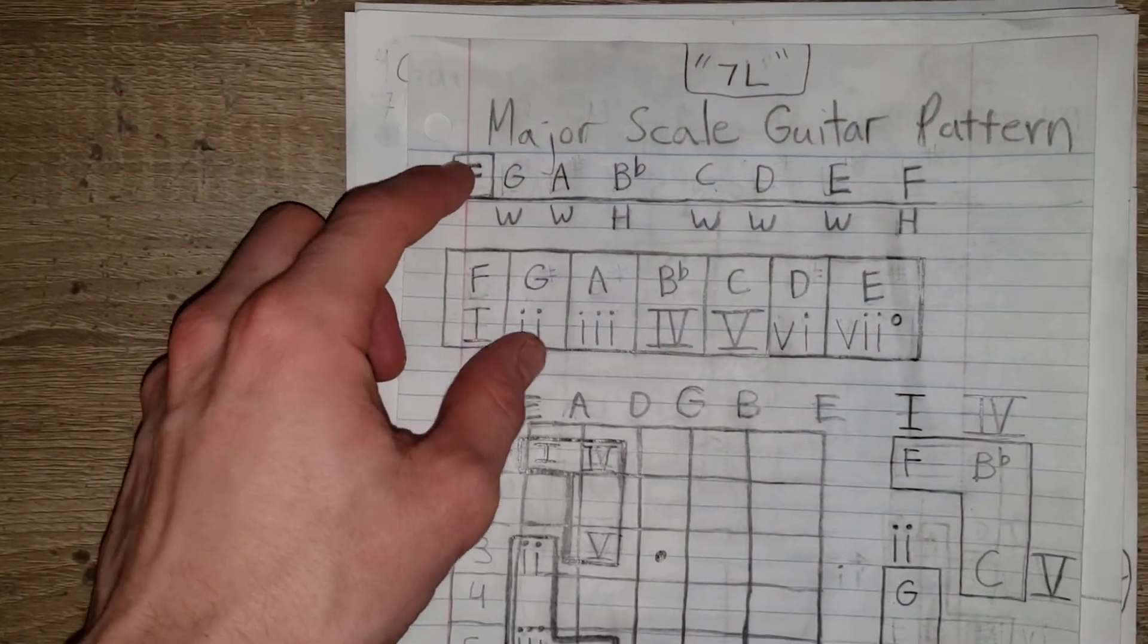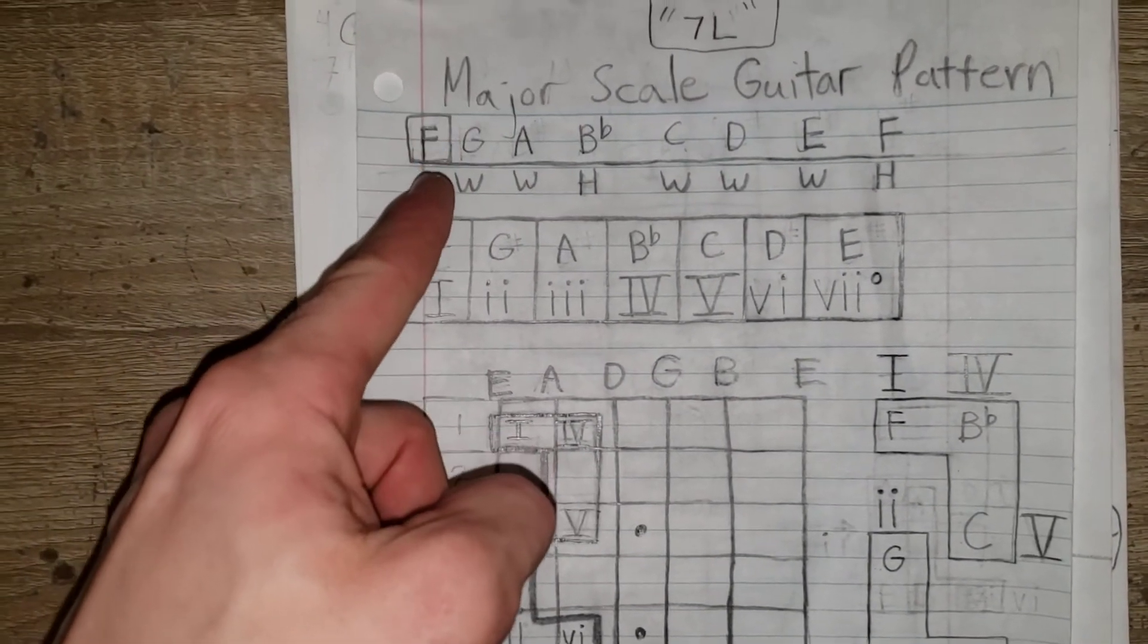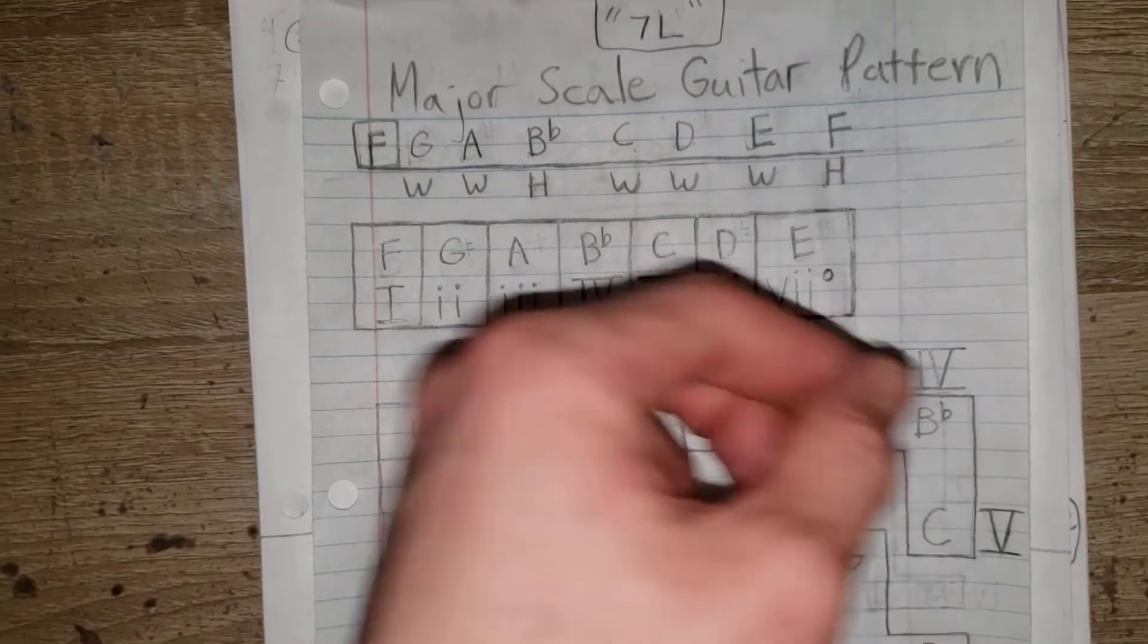So your F major scale is whole, whole, half, whole, whole, half, as we talked about in the major scale video. So here that is, F major.